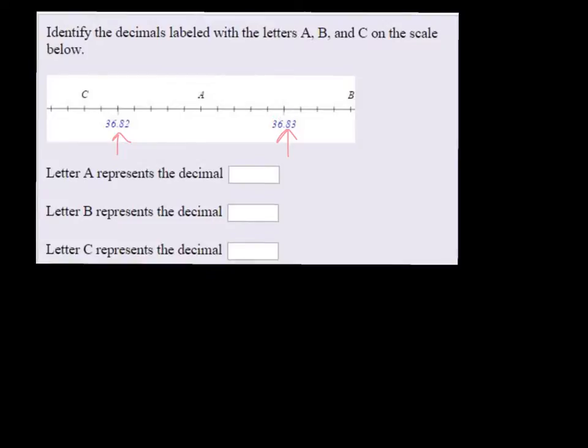Okay, so A is, we count the dashes now. A is from 36.82, 1, 2, 3, 4, it's the fifth dash over. So that means it's 5 out of 1000th.